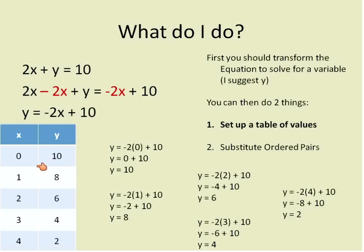When x is 0, y is 10. When x is 1, y is 8. When x is 2, y is 6. When x is 3, y is 4. And when x is 4, y is 2. These are called ordered pairs. And they're usually written, and you'll see this in just a second, but they're written in a certain way.